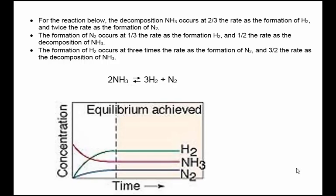the decomposition of ammonia occurs at two-thirds the rate as the formation of H2 and twice the rate as the formation of N2. And those differences in rates need to be reflected in the curves.